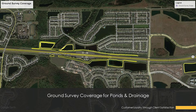Conventional survey still has a place whenever you're using remote sensing, because there are places where the technology cannot be leveraged. On this project, the focus was ponds and wet areas — LiDAR cannot penetrate water due to refraction. All drainage structures throughout the project — manholes, catch basins, culverts — were collected conventionally, as were ponds and heavily wet or vegetated areas that we identified using Google Earth.